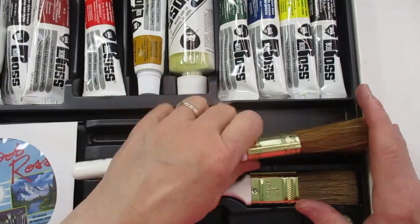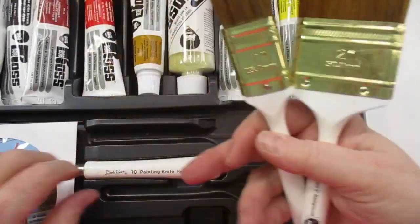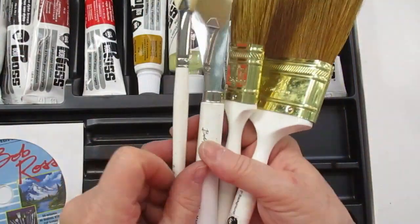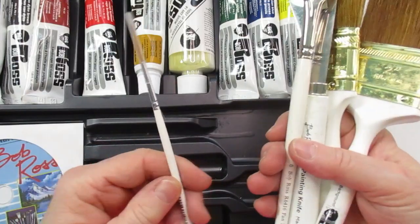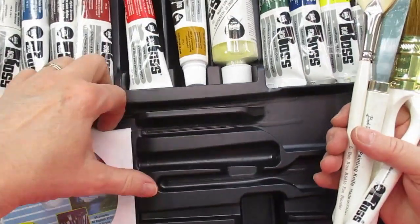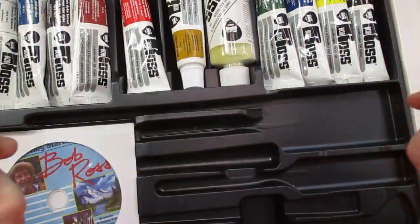It's got the brushes and you have your knife, the fan brush, and a script liner. It also came with a DVD, okay.